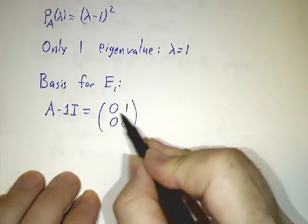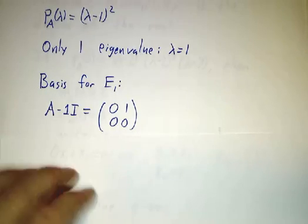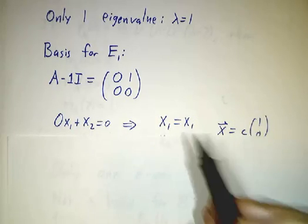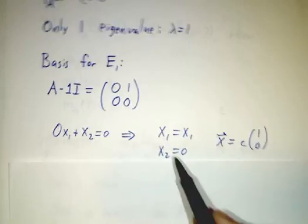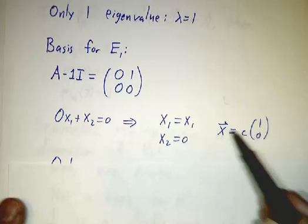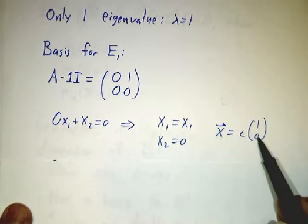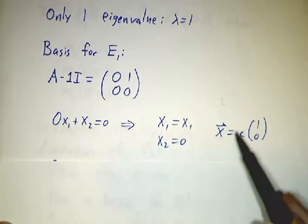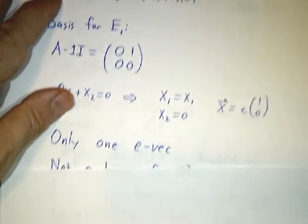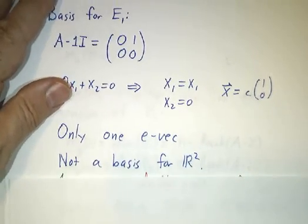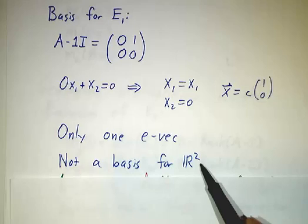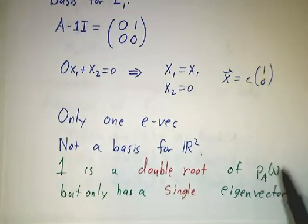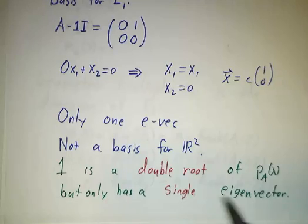The pivot variable is the second variable. The free variable is the first. Our first equation is 0x₁ + x₂ = 0. In other words, x₁ can be whatever it wants and x₂ has to be 0. And so our eigenvector has to be a multiple of [1,0]. That means that there is only one linearly independent eigenvector. If you take any two eigenvectors, they have to be multiples of each other. And the matrix isn't diagonalizable.